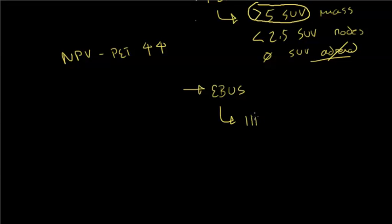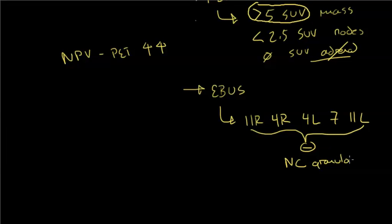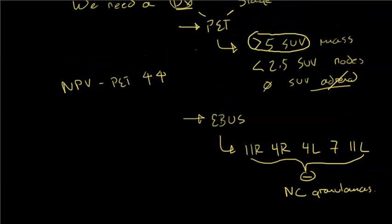We went ahead and did an EBUS. We sampled 11R, 4R, 4L, 7, and even 11L. All of these lymph nodes came back negative, and they had non-caseating granulomas in them.